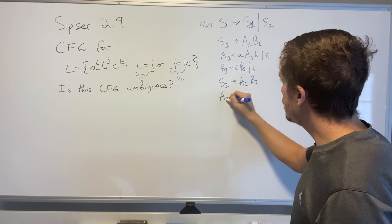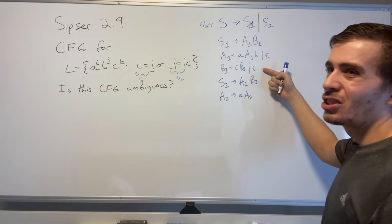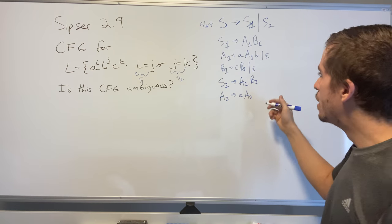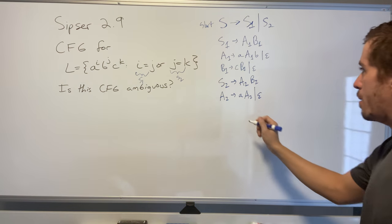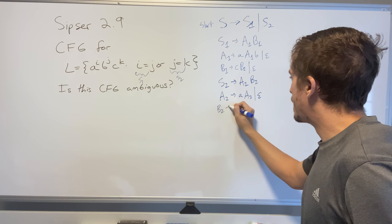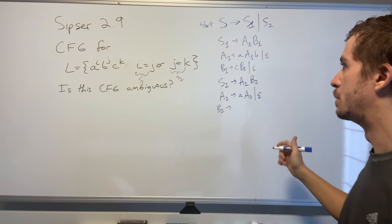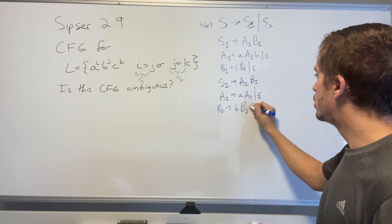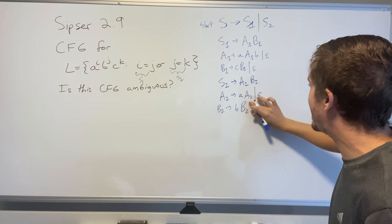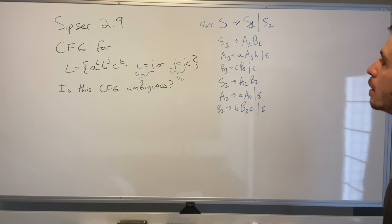The A2 variable is going to make any number of a's that we want, so it's essentially the same thing as B1 except it's changing it appropriately to a, A2. And then B2 is going to be essentially identical to the A1 variable except now we're going to make the appropriate substitution: b, B2, c or epsilon.